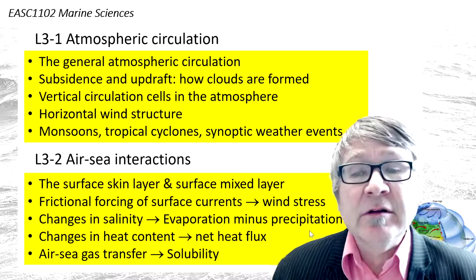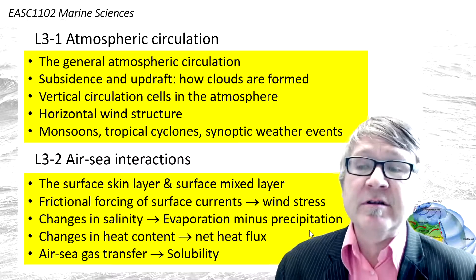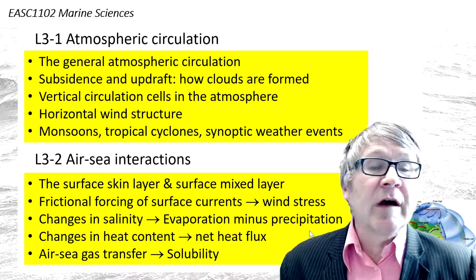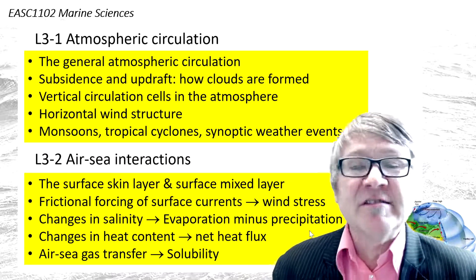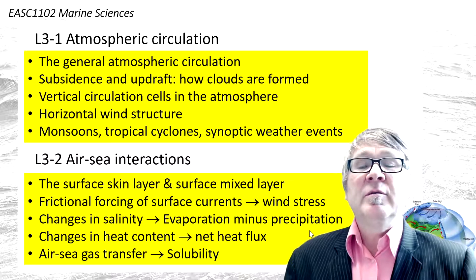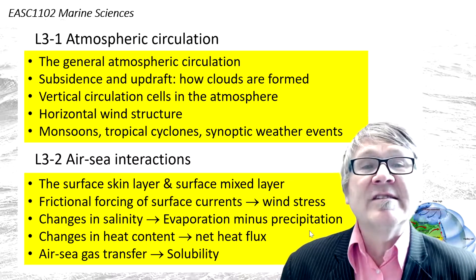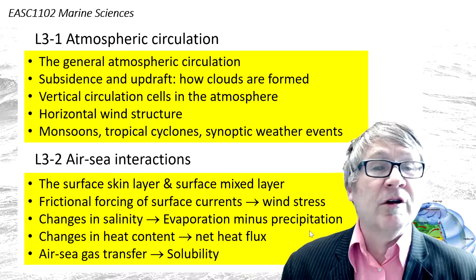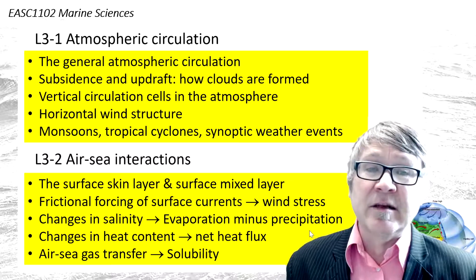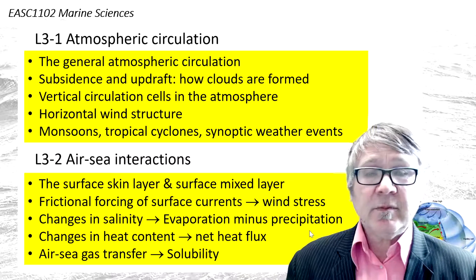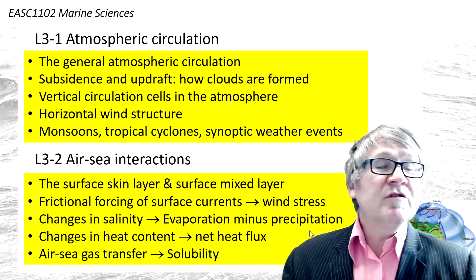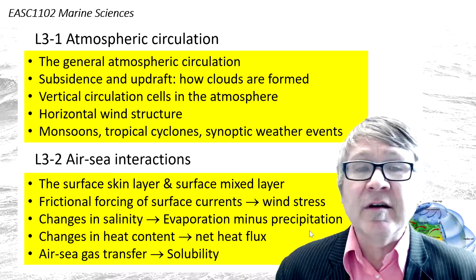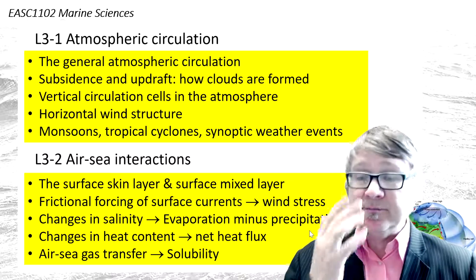We talk about the general atmospheric circulation, subsidence and updraft, and how clouds are formed or suppressed. We also cover vertical circulation cells in the atmosphere, the horizontal wind structure — including trade winds and westerlies — and monsoon tropical cycles and synoptic weather events.